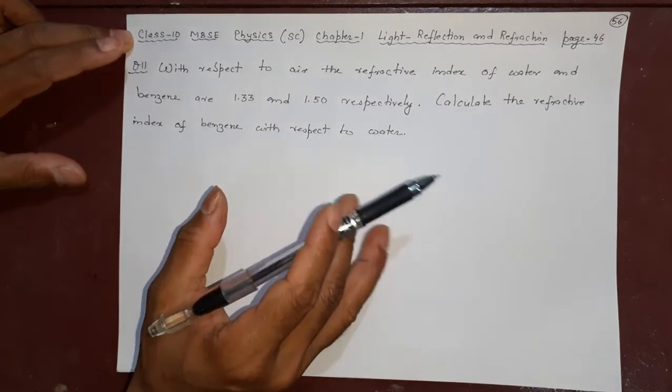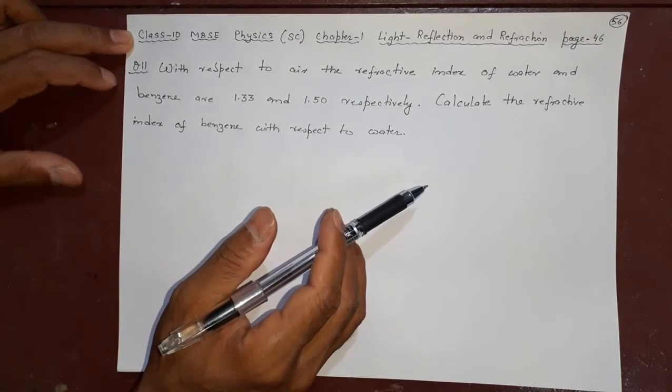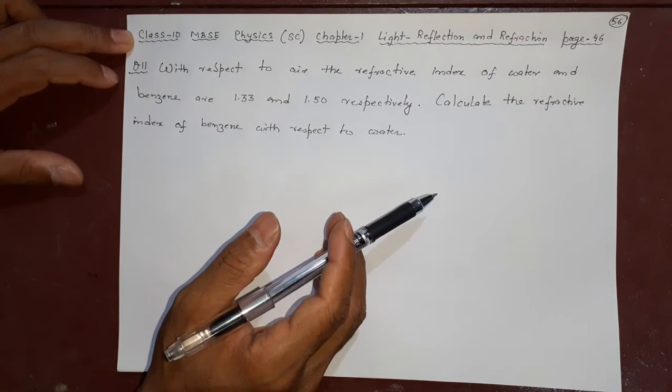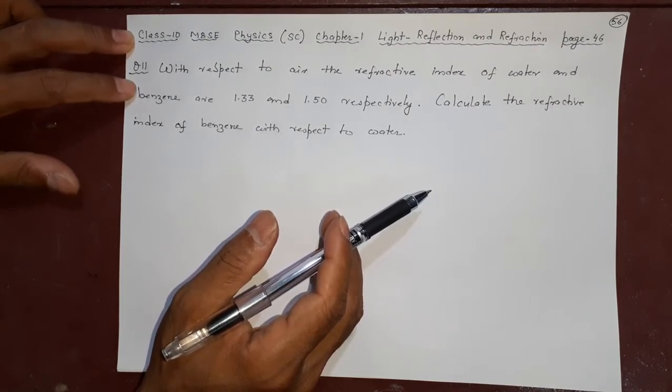This question is not on lens and mirror, it is on refractive index. This type of question we have already solved in the numerical examples of the textbook, second example I believe, page 26.